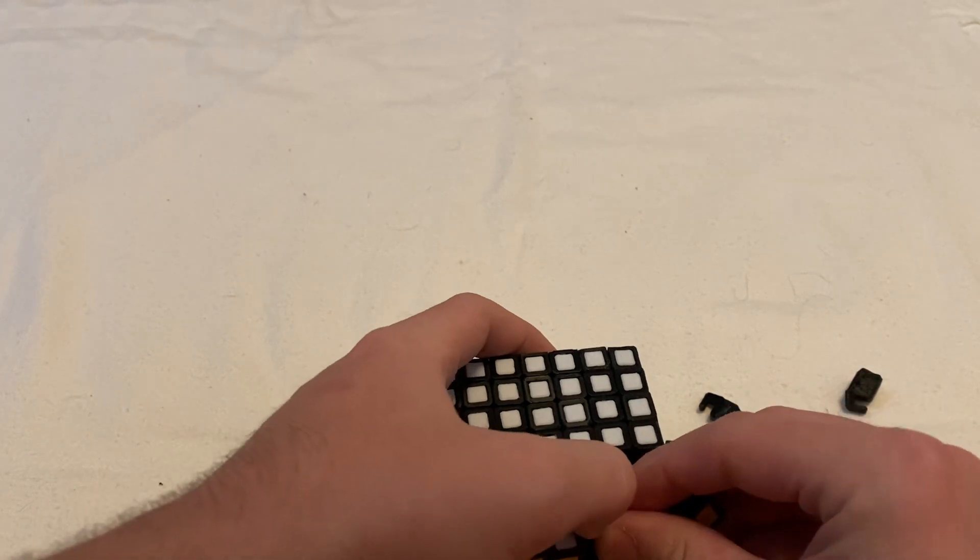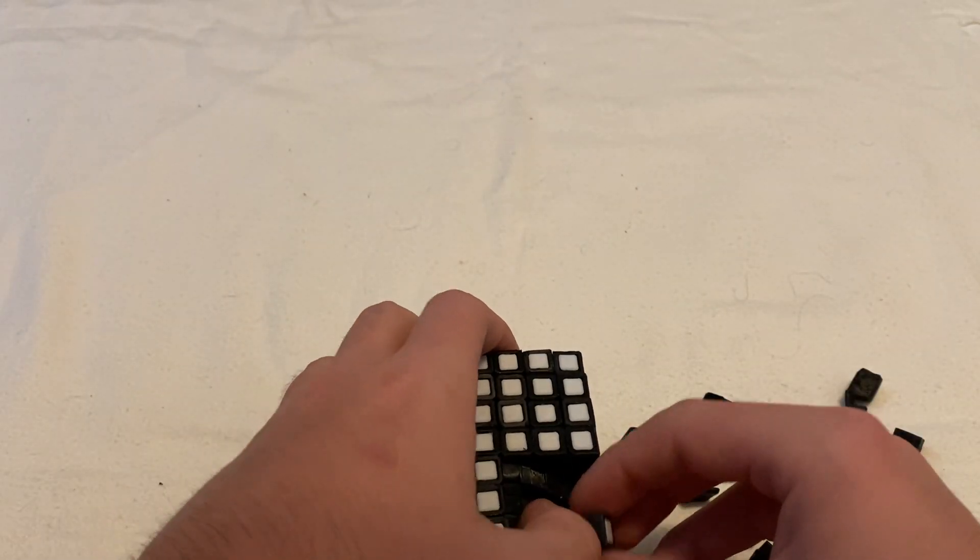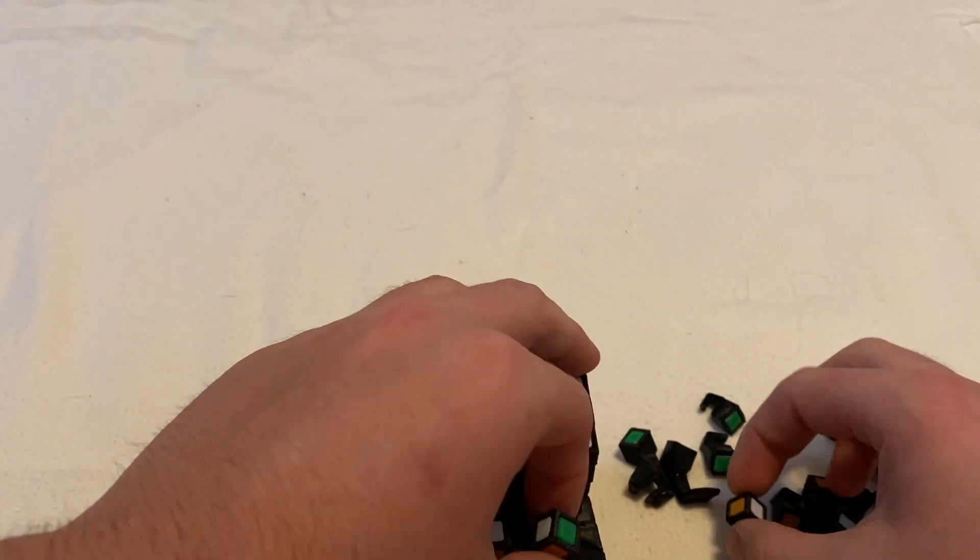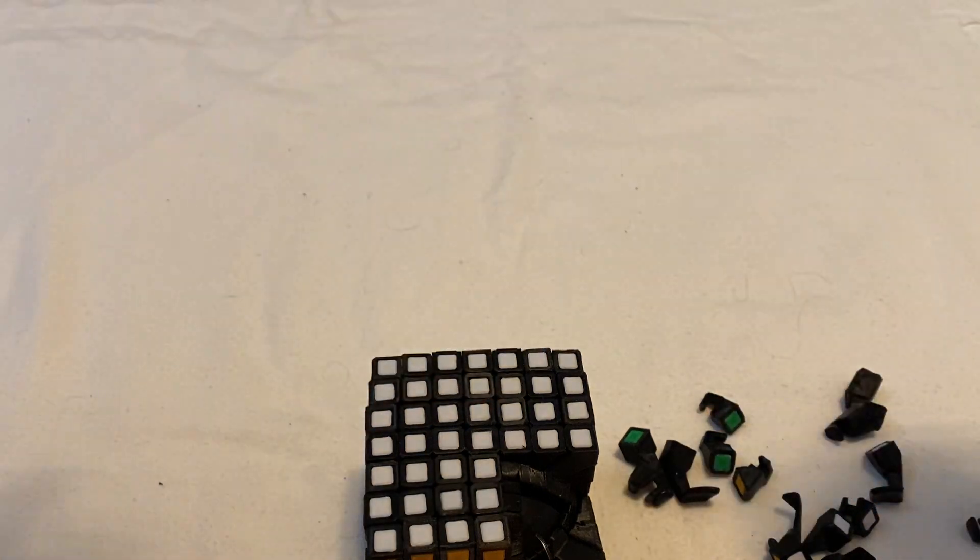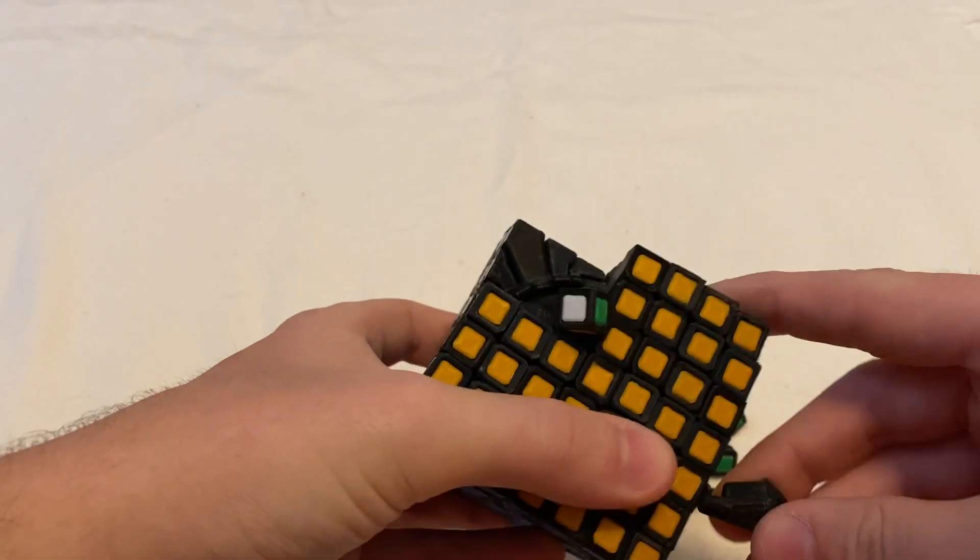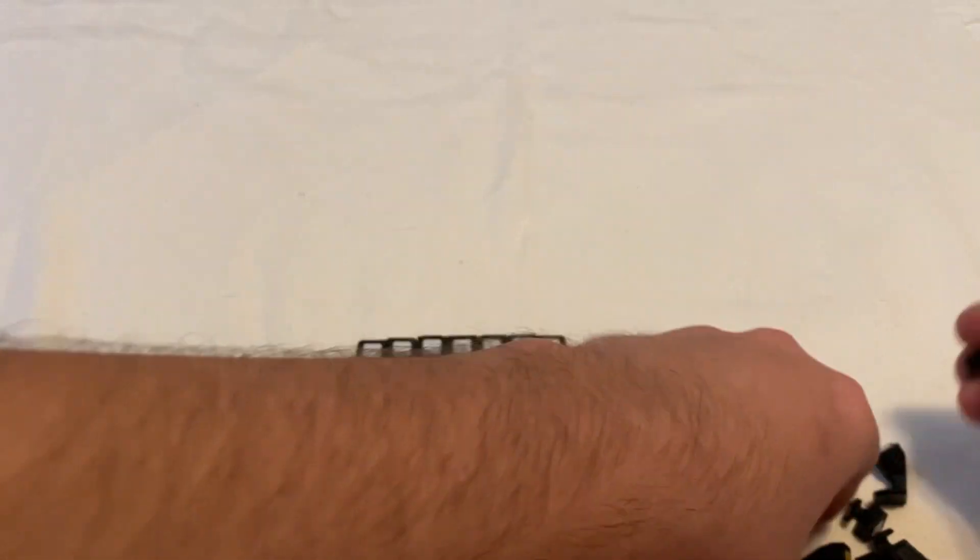So yeah, this does work except for the fact that when you turn the top layer the corners fall out of place. But they are physically attached to the puzzle and therefore I think this does count as a fully functional proportional 7x7.